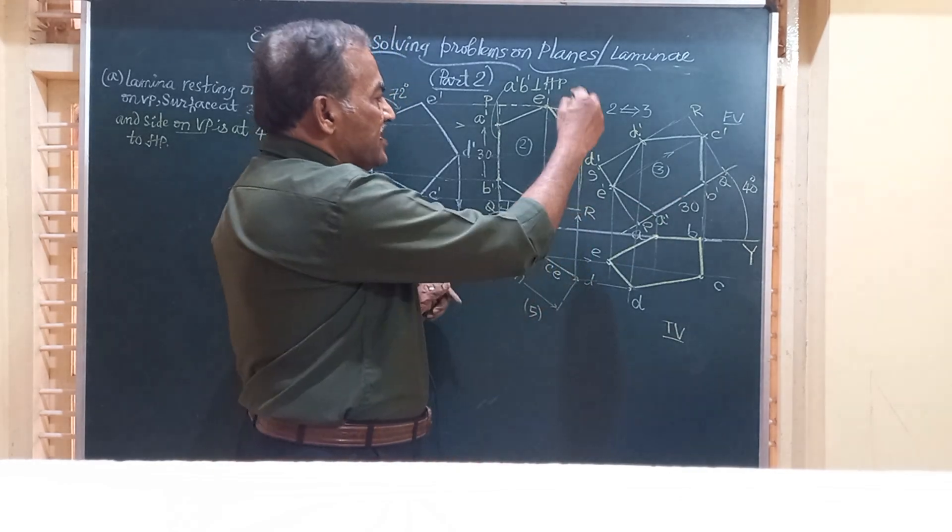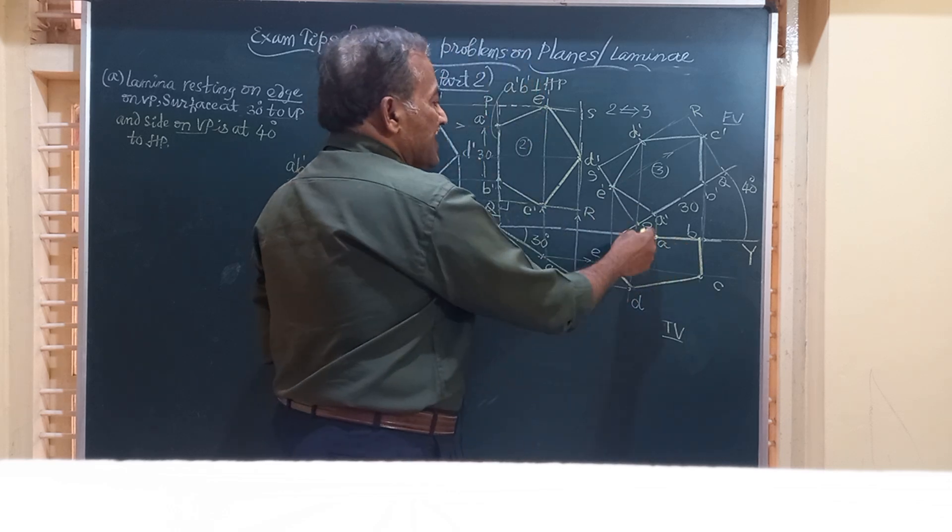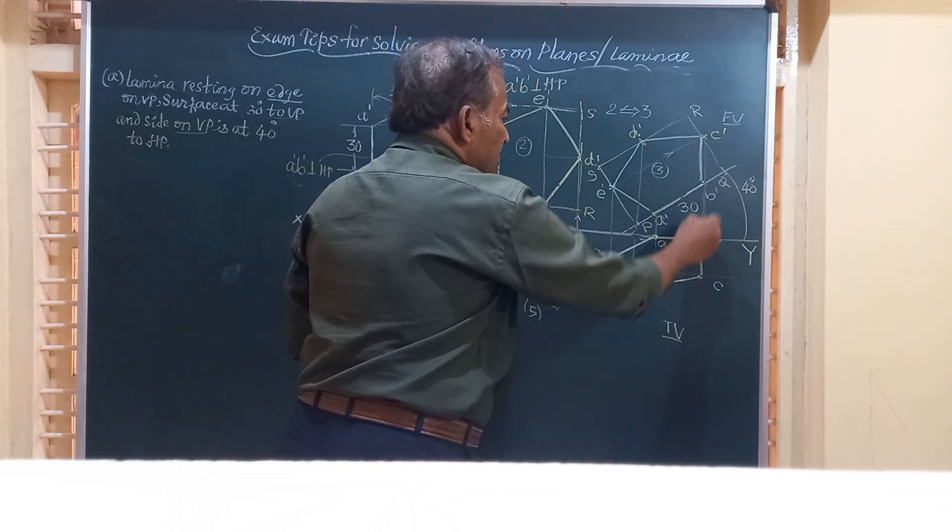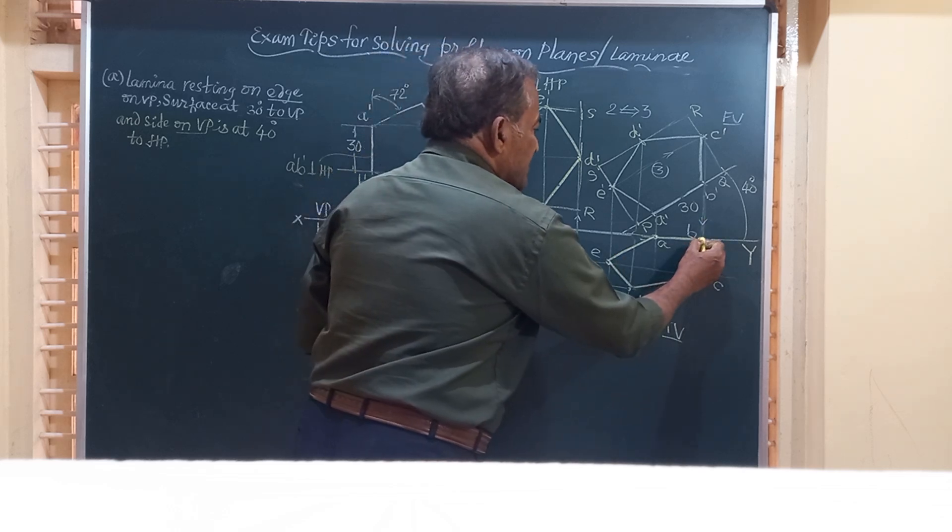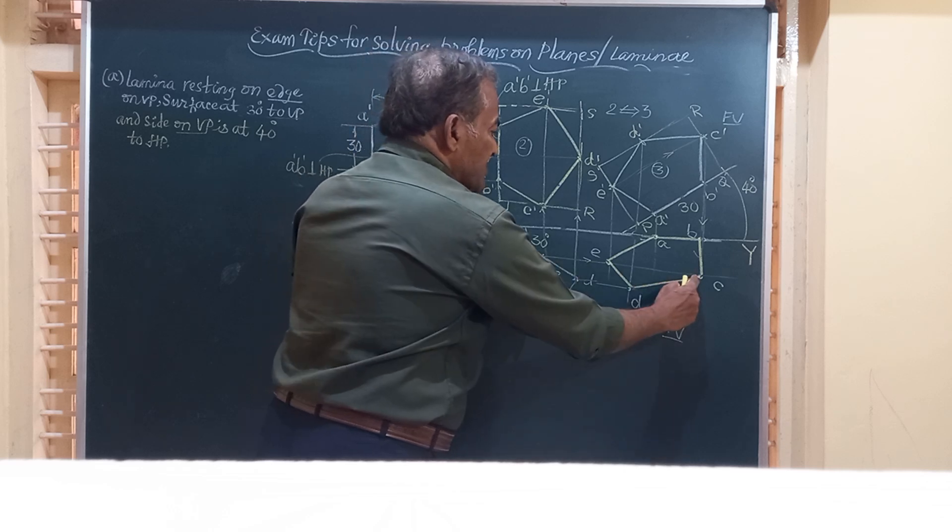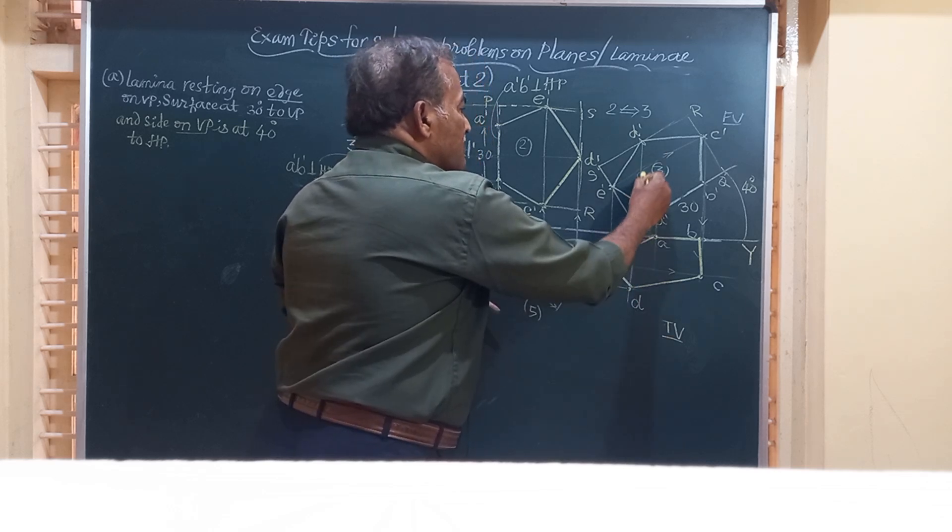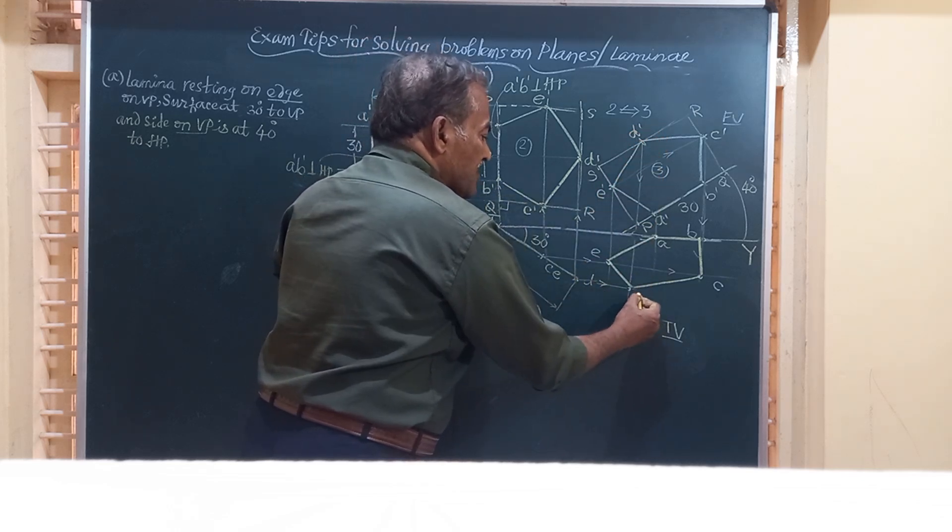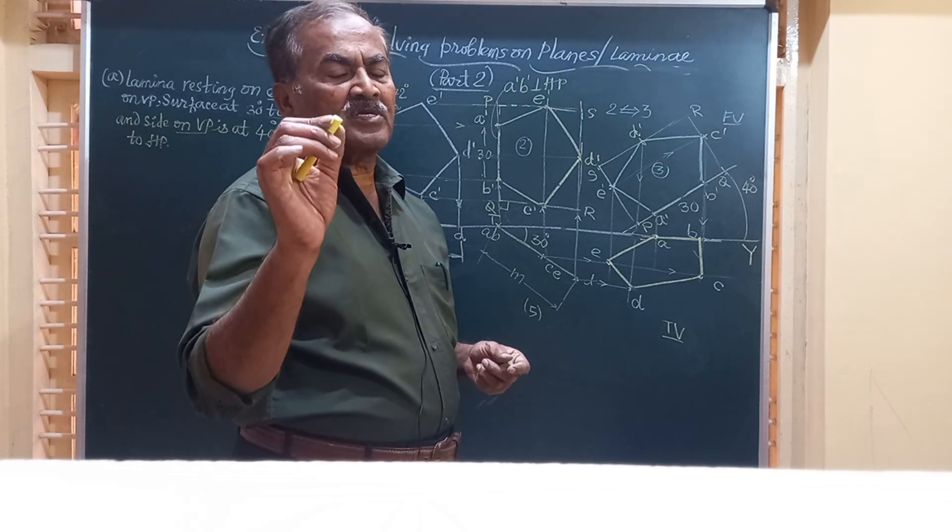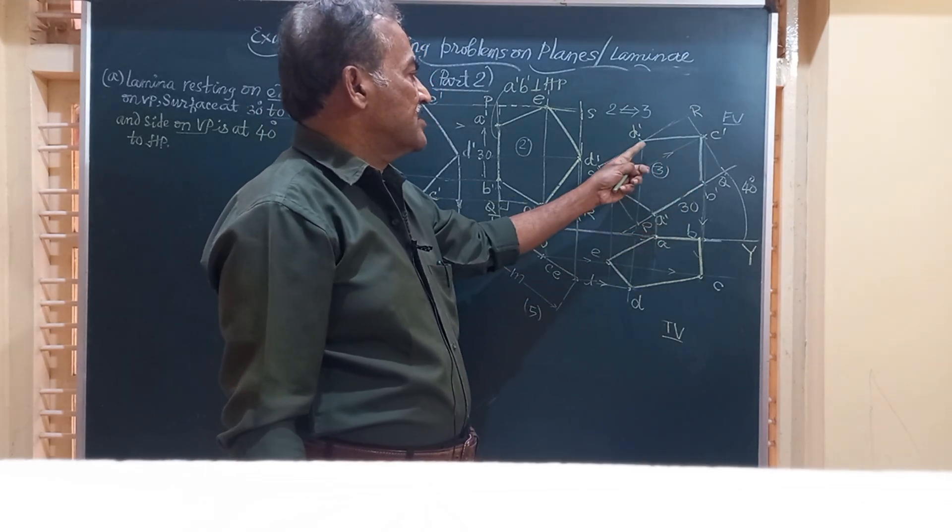We obtain the points A, B, C, D, E etc by projecting these lines one by one. To get point A, vertical line from A dash, horizontal line from here, they meet here. Similarly vertical line from B, horizontal line from this B, they intersect here. So you got AB. Then to get C, the vertical line from C, the horizontal line from this, the point of intersection will give you C. Similarly E you will get here. Finally D, drive vertical line from D, a horizontal line from here, the point where those two intersect is D. Friends, join all these five points by straight line. This will represent the final top view of the lamina and this A dash, B dash, C dash, D dash, E dash gives you final front view.